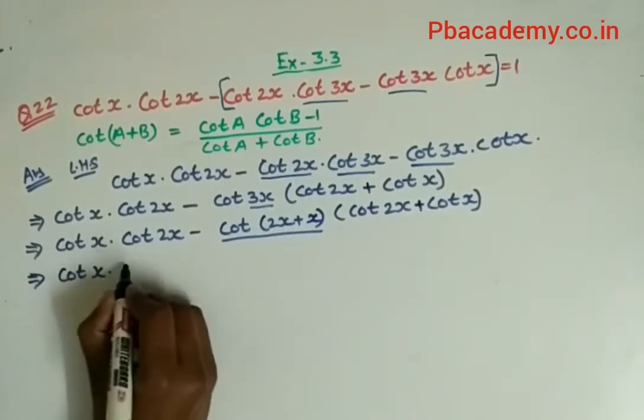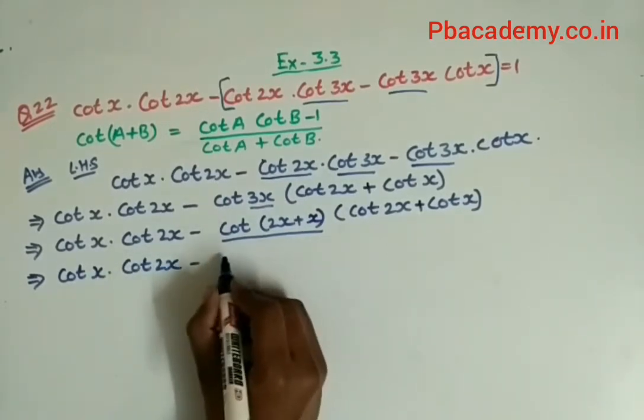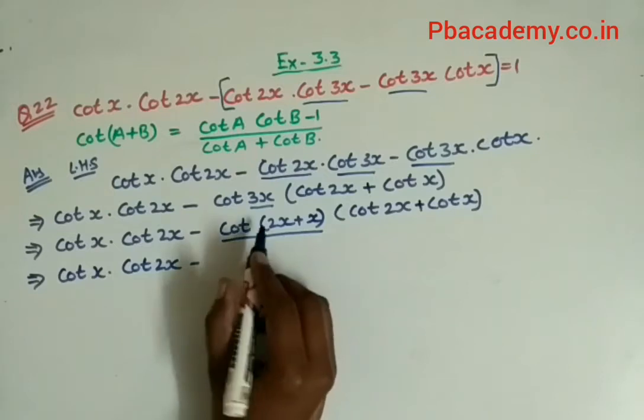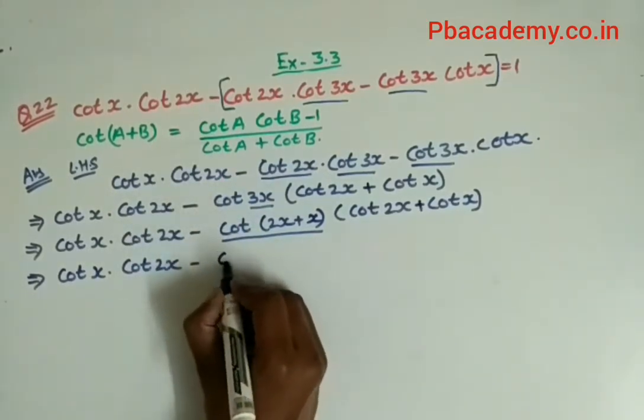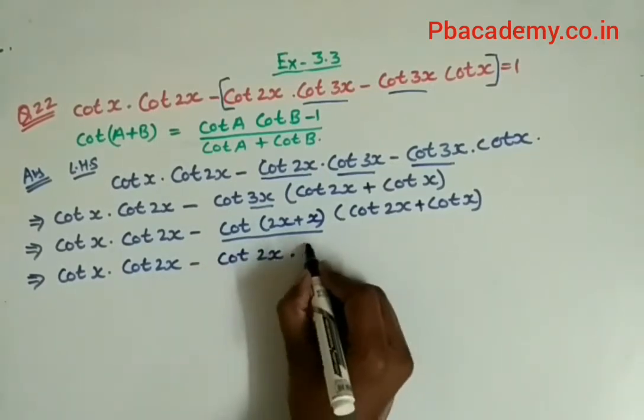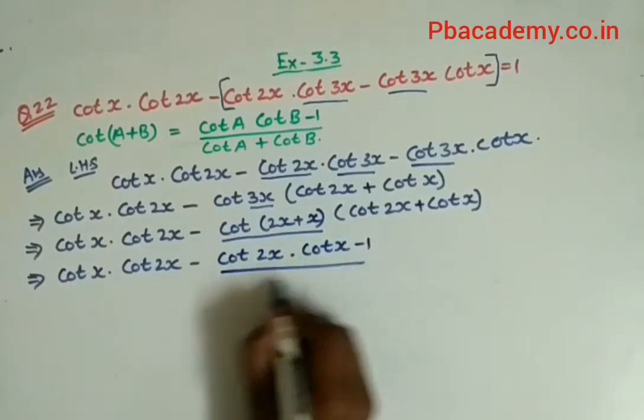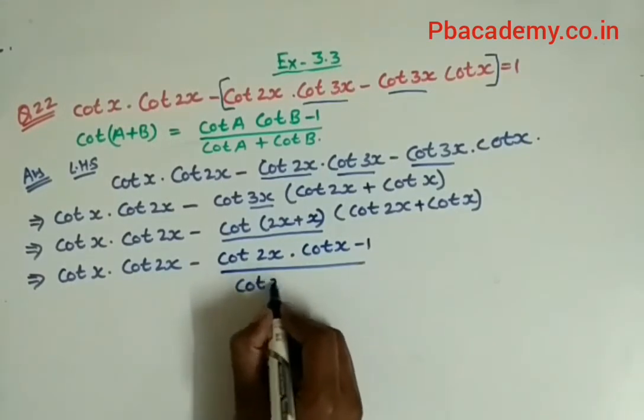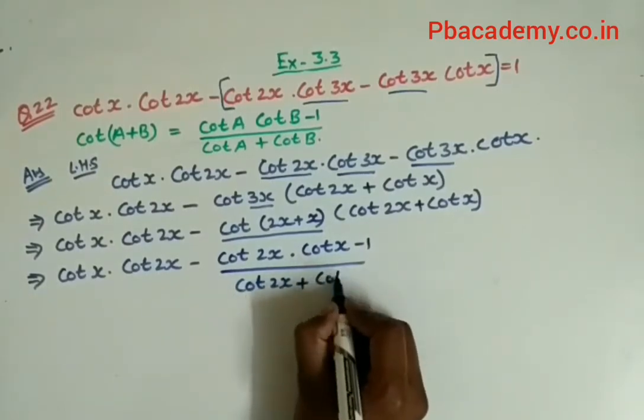So it will become cot x · cot 2x - cot(2x + x). Applying the identity, it becomes (cot 2x · cot x - 1) / (cot 2x + cot x).